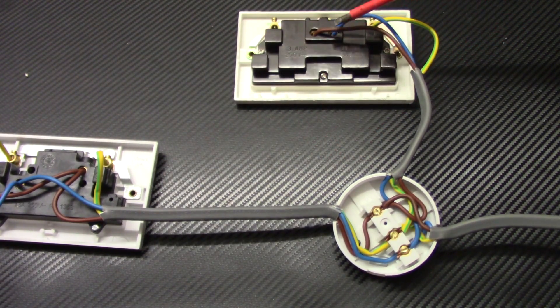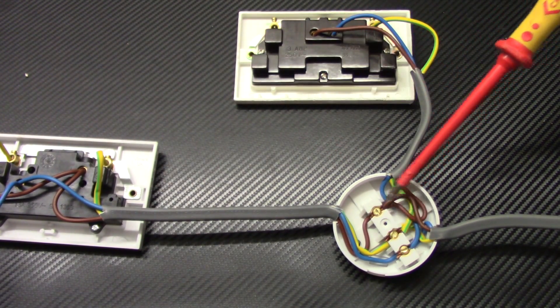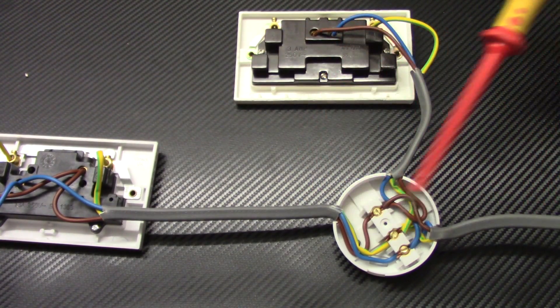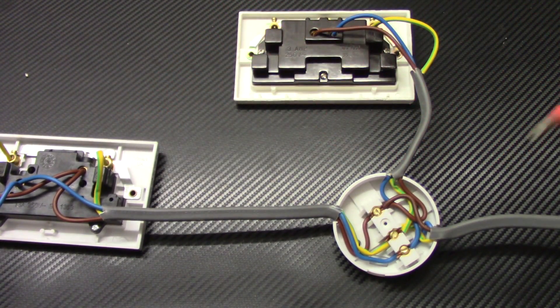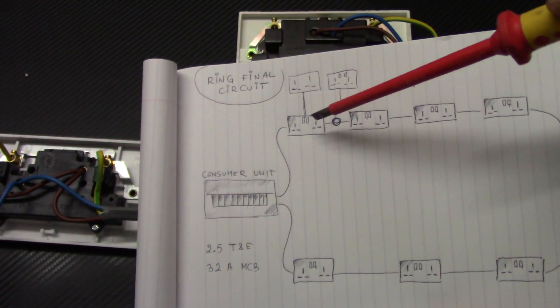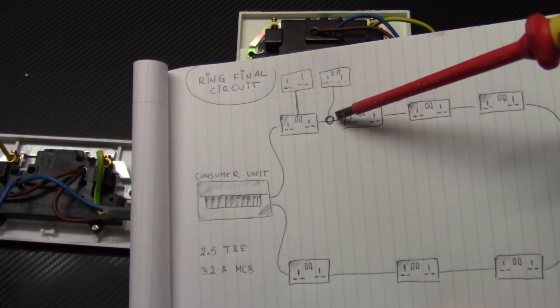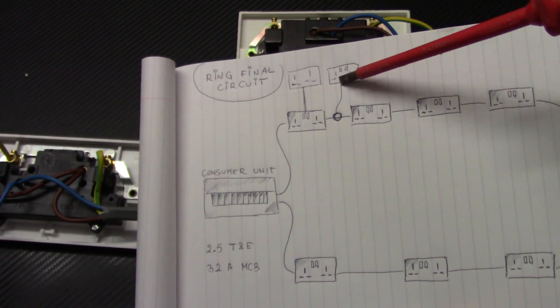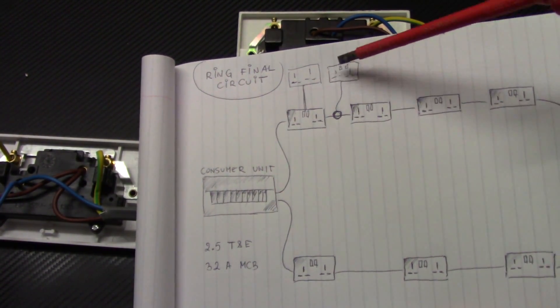So that's the spare taken from the junction box fitted on the ring cable in between two socket outlets. What I've done, basically, between two sockets I cut the cable, fitted the junction box, and I connected another socket outlet which is our spare.